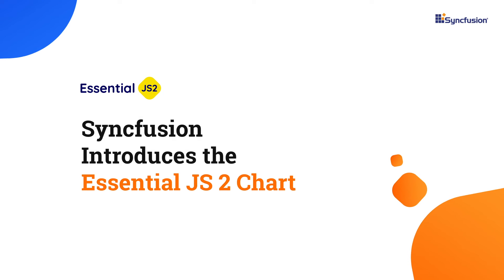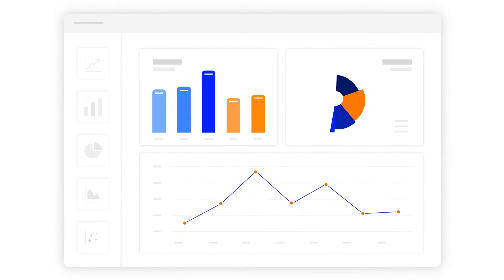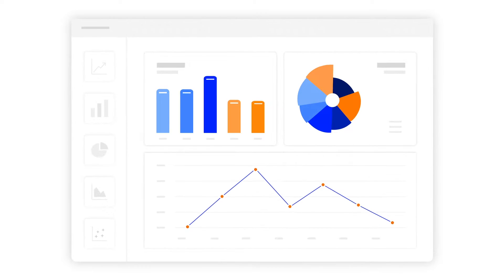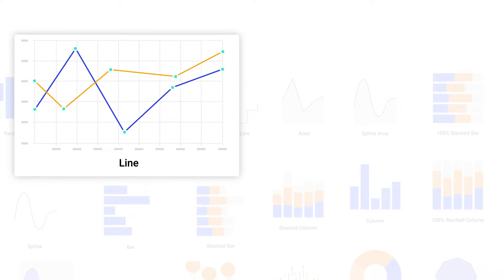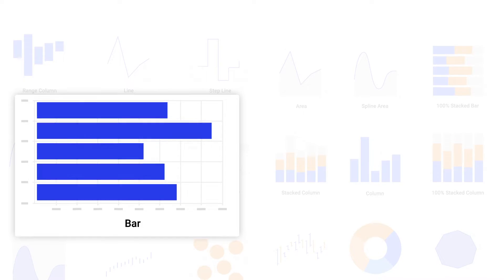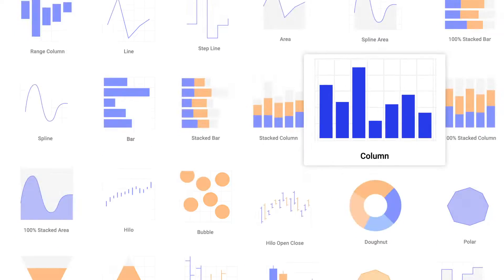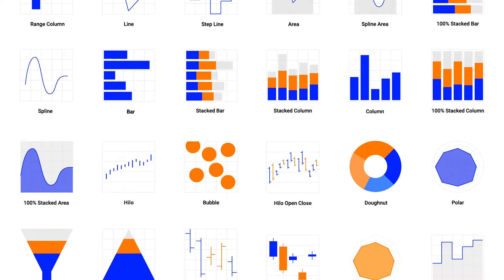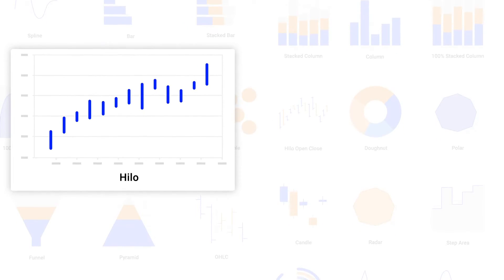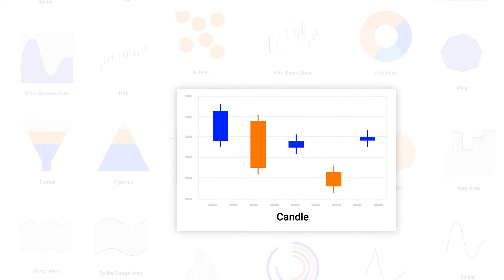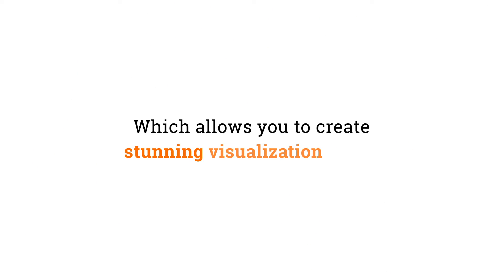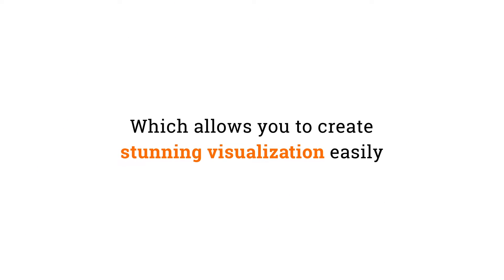Syncfusion introduces the Essential JS2 Charts component that allows you to visualize your information in an understandable format. More than 30 chart types ranging from basic ones like line charts, bar charts, and column charts to more complex financial charts like high-low charts, high-low open close charts, and candle charts, which allow you to create stunning visualizations easily.